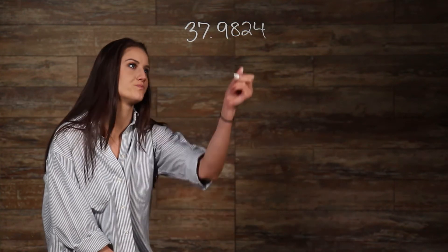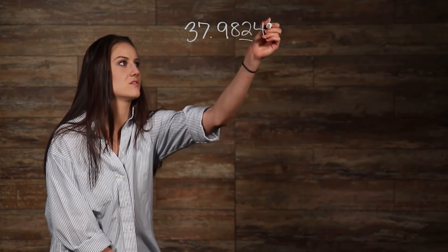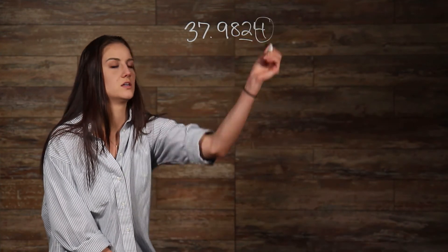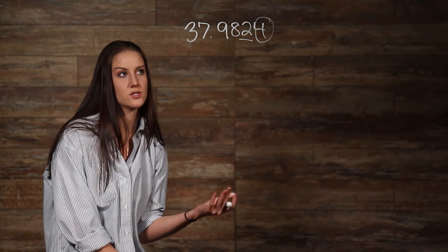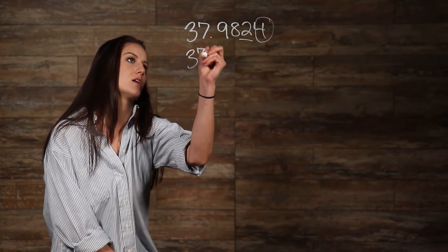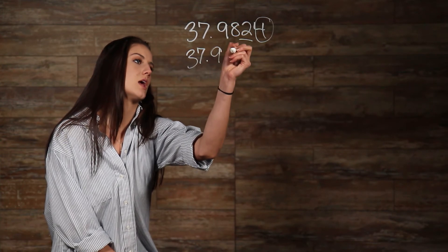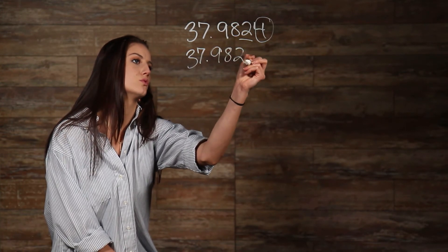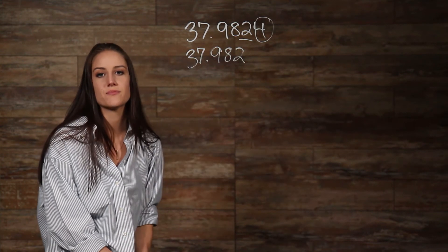So let's find our round-off digit, which is 2. Now look at the number to the right of that round-off digit, which is 4. Since 4 is less than 5, the round-off digit stays the same and everything to the right of it can be dropped. So our answer then would be 37.982.